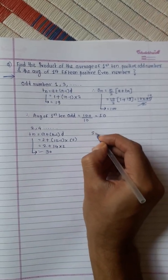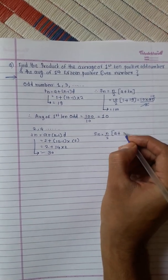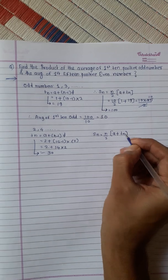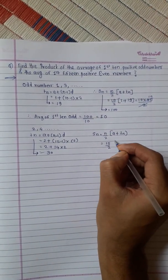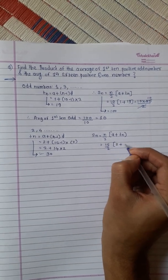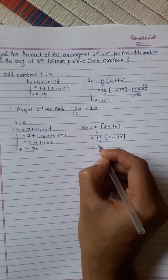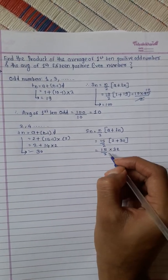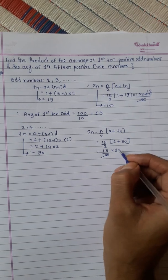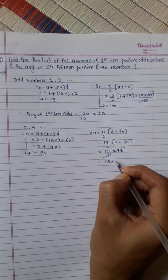Now, we will find the sum. Sum equals n by 2 into (a plus last term). Total numbers are 15 divided by 2. First term is 2 plus last term is 30. This will be 15 divided by 2 into 32. This is 2, this is 15 into 16.